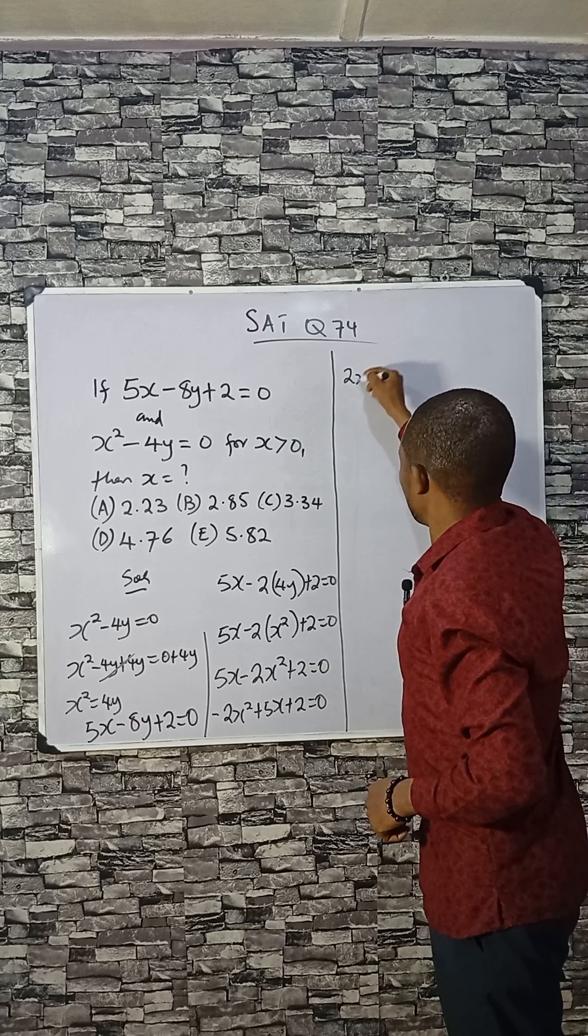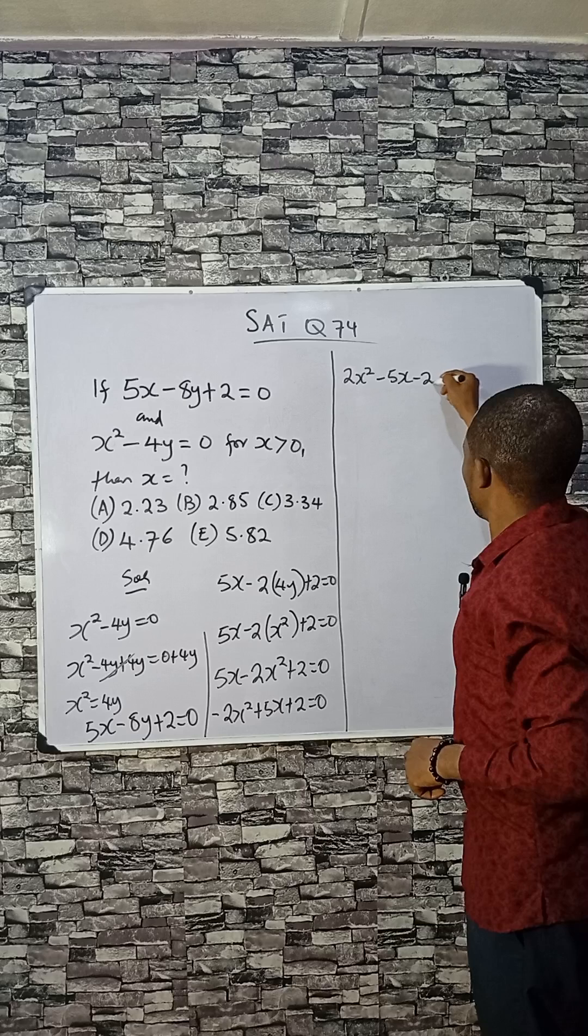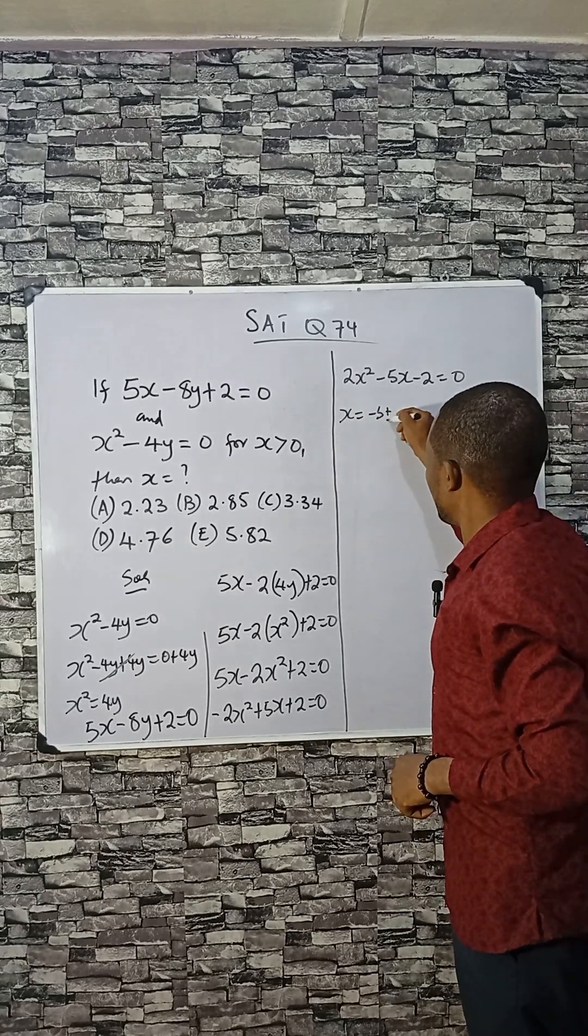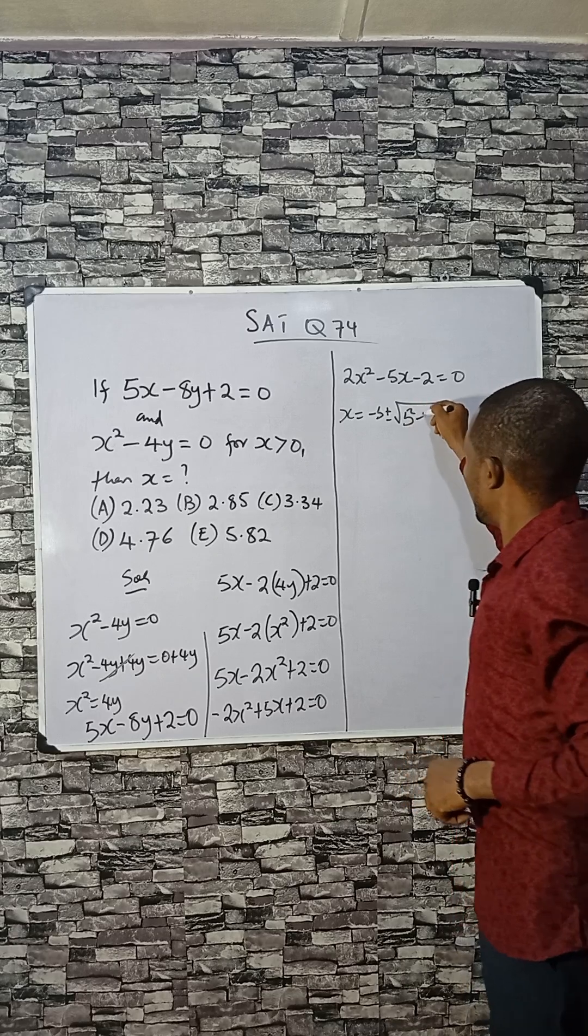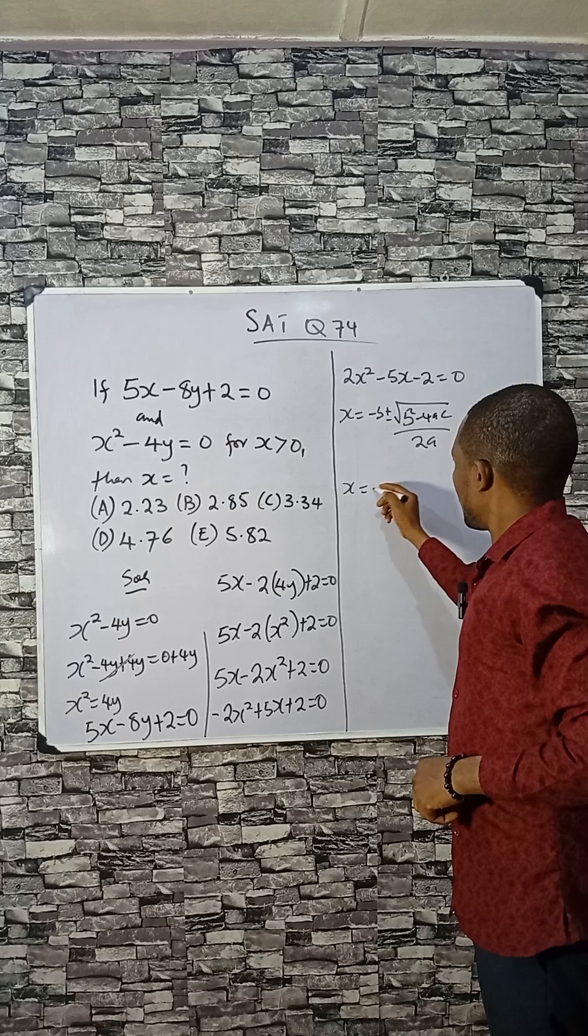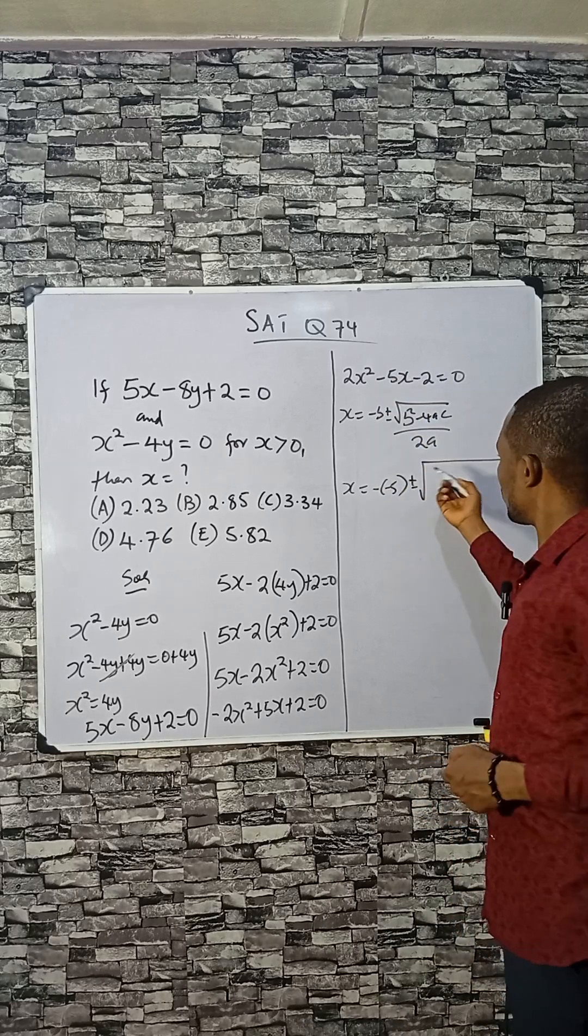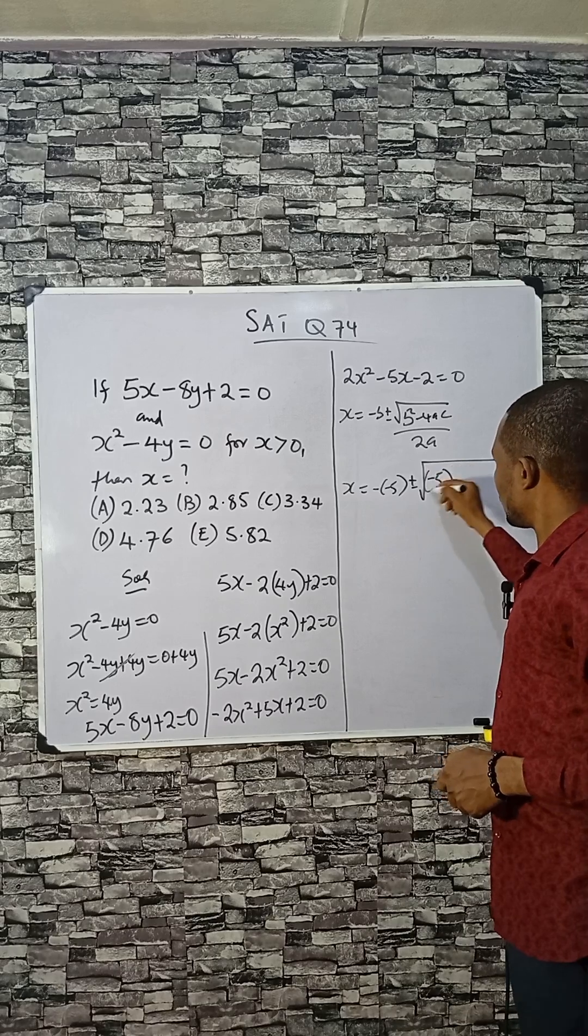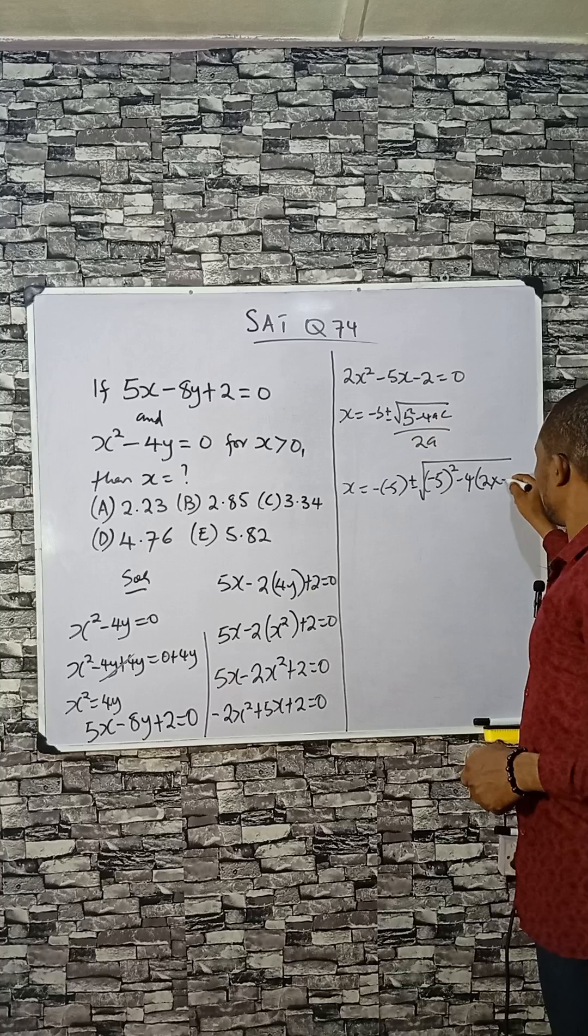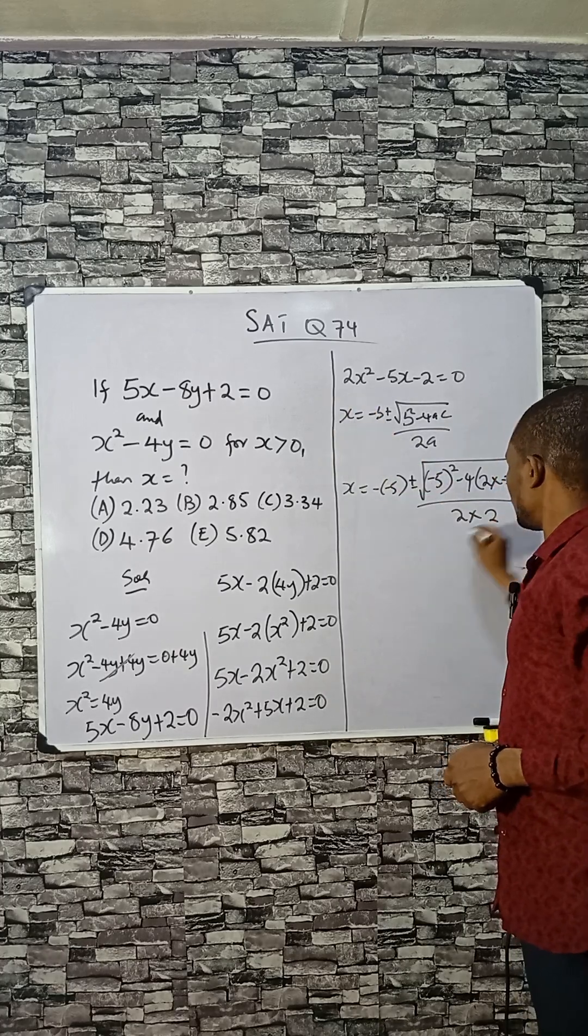We are going to use the quadratic formula: x = (-b ± √(b² - 4ac)) / 2a. Our b is -5, so x = (5 ± √((-5)² - 4(2)(-2))) / (2×2). Our a is 2, c is -2.